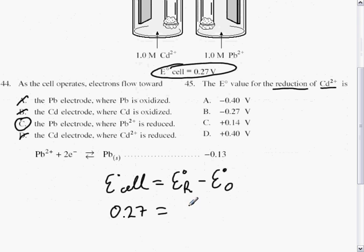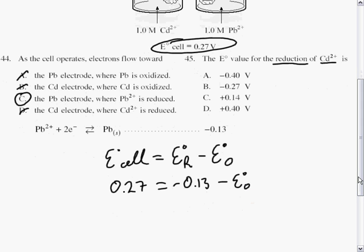Minus the E° for our oxidation reaction. That would mean we have 0.40 is equal to minus E° of oxidation.